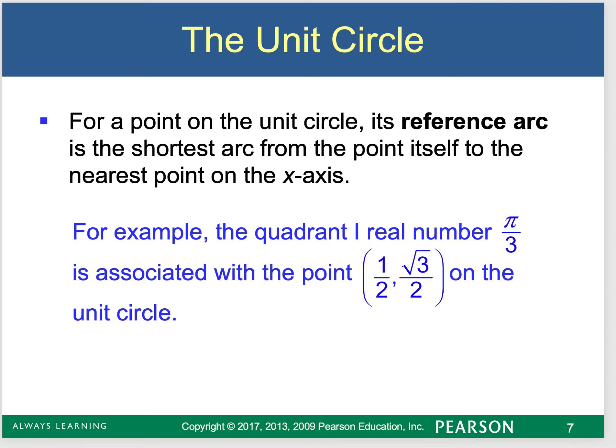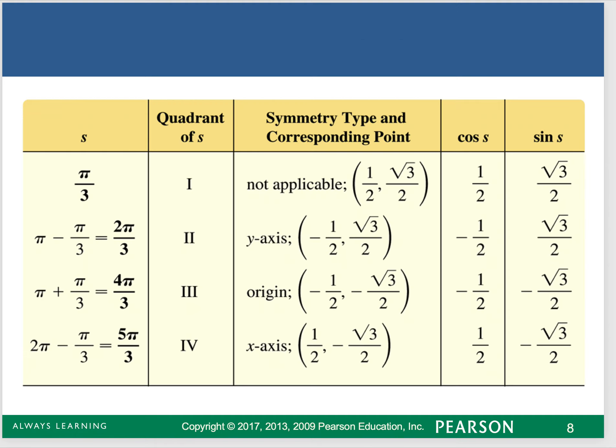For any point on the unit circle, its reference arc is the shortest arc from the point itself to the x axis. This is talking about reference angles. If I'm in quadrant 2, 3, or 4, I'm going to have to relate it to a reference angle in quadrant 1, and then follow the convention to get the sign of the final answer.